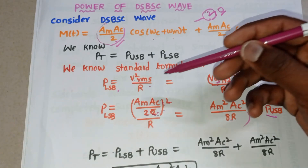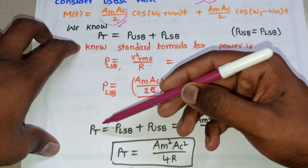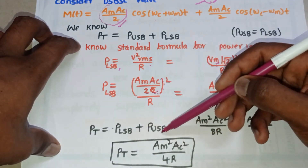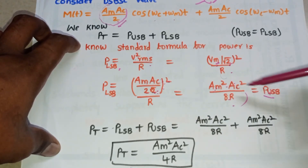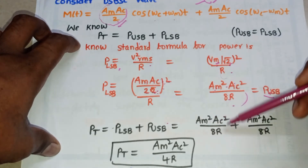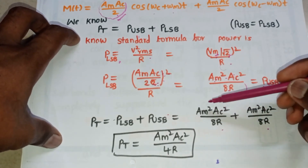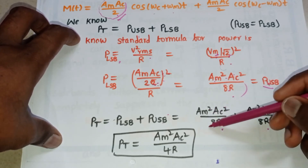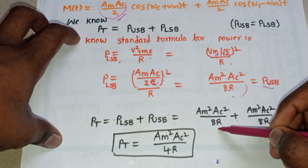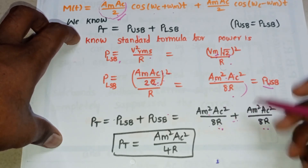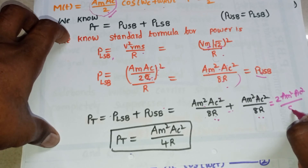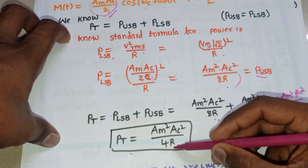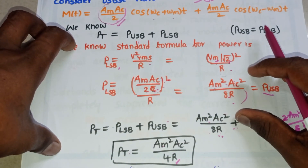The total power in the DSBSC wave is P_USB + P_LSB = Am²Ac²/8R + Am²Ac²/8R = 2 × Am²Ac²/8R = Am²Ac²/4R. Therefore, the total power of the DSBSC wave is Am²Ac² / 4R.